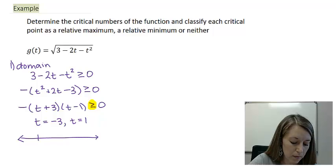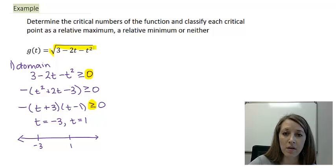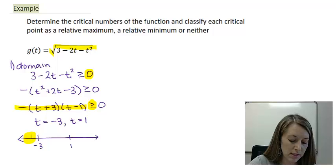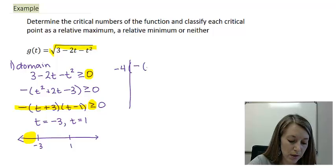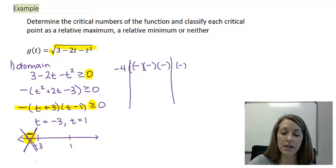We're looking for where the expression is positive, because that tells us the inside of the square root is ≥ 0 and the function is defined there. Testing a value less than −3, say t = −4, in the factored form: we have a negative out front, (−4 + 3) = −1, and (−4 − 1) = −1. Multiplying three negatives gives a negative, so the function is not defined for t < −3.